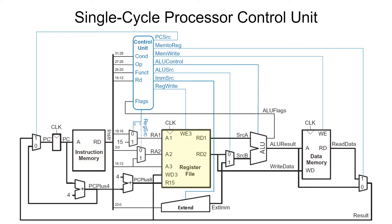The register file contains the 16 registers that ARM uses to store commonly used variables and information like the program counter, stack pointer, arguments, etc. Note that A1, A2, and A3 hold addresses for the two source and destination registers. RD1 and RD2 hold the contents of the source registers, and WD3 is the content to be written into the destination register.